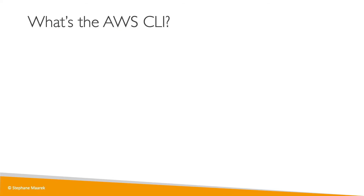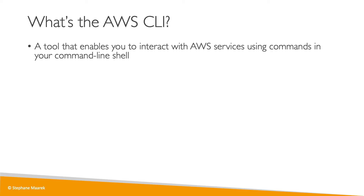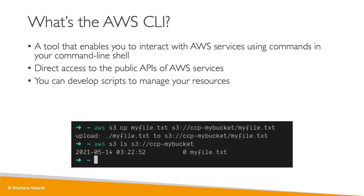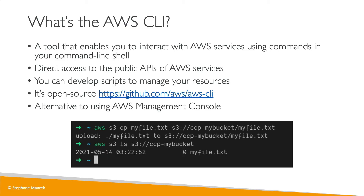If you're new to the cloud or IT, you might not know what a CLI is. CLI stands for Command Line Interface. The AWS CLI is a tool that allows you to interact with AWS services using commands from your command line shell. Whenever you see code where you type a command and it returns a result — for example, AWS S3 CP — this is the CLI, and every command starts with the word AWS. With this CLI, you get direct access to the public APIs of your AWS services, and you can develop scripts to manage your resources and automate tasks. The CLI is open source — you can find all the source code on GitHub — and it is an alternative to using the AWS Management Console.